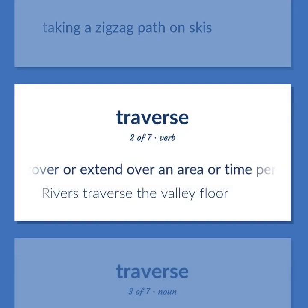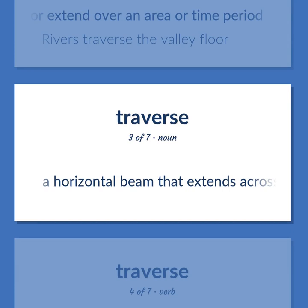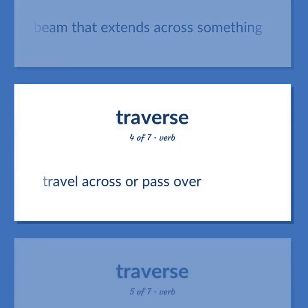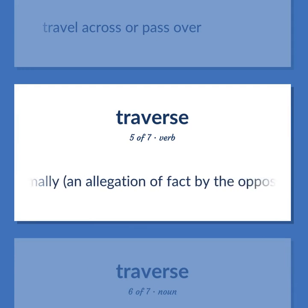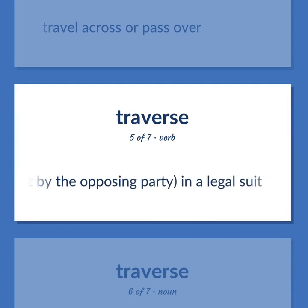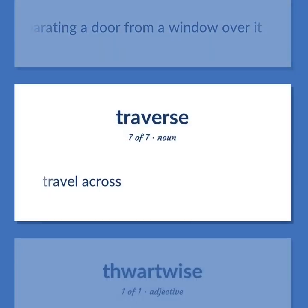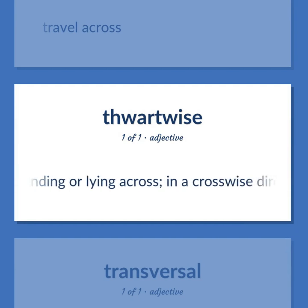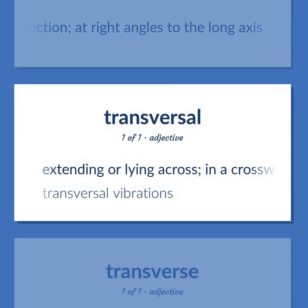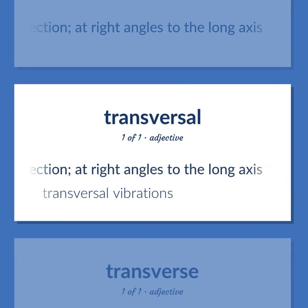Traverse: To cover or extend over an area or time period — rivers traverse the valley floor. A horizontal beam that extends across something. Travel across or pass over. Deny formally an allegation of fact by the opposing party in a legal suit. A horizontal cross piece across a window, or separating a door from a window over it. Extending or lying across, in a crosswise direction, at right angles to the long axis — transversal vibrations.